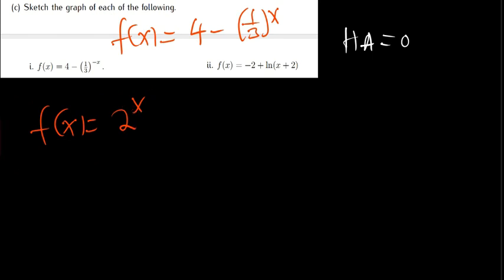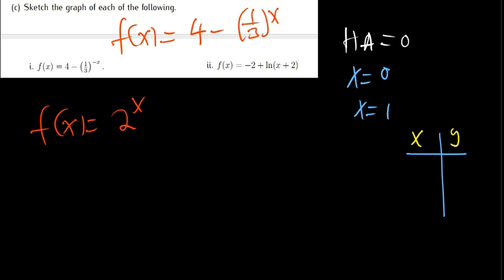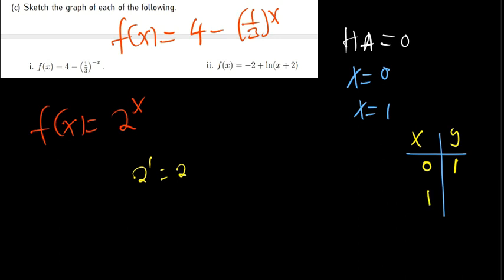Let me show you the parent graph first. We equate the power equal to two things: x = 0 and x = 1. Setting up a table of coordinates: when x = 0, we get 2^0 = 1, so the coordinate is (0, 1). When x = 1, we get 2^1 = 2, so the coordinate is (1, 2).